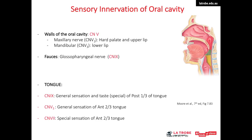In summary, for general sensation, the lingual nerve supplies the anterior two-thirds of the tongue, and the glossopharyngeal nerve supplies the posterior one-third. For taste, the chorda tympani supplies the anterior two-thirds, and the glossopharyngeal nerve supplies the posterior one-third. The oral cavity walls are supplied by the trigeminal nerve (mandibular and maxillary branches), the fauces by the glossopharyngeal nerve, and the tongue's innervation depends on anterior two-thirds versus posterior one-third.